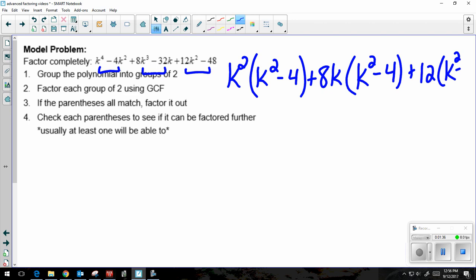And I'm left with k squared minus 4. Now you should notice that all of your parentheses match. If at this step your parentheses don't match, go back and check. Maybe you made a mistake or maybe this method just doesn't work for this problem.